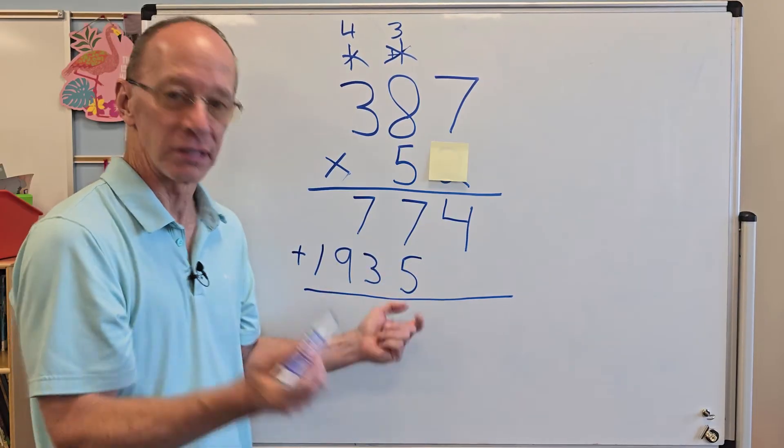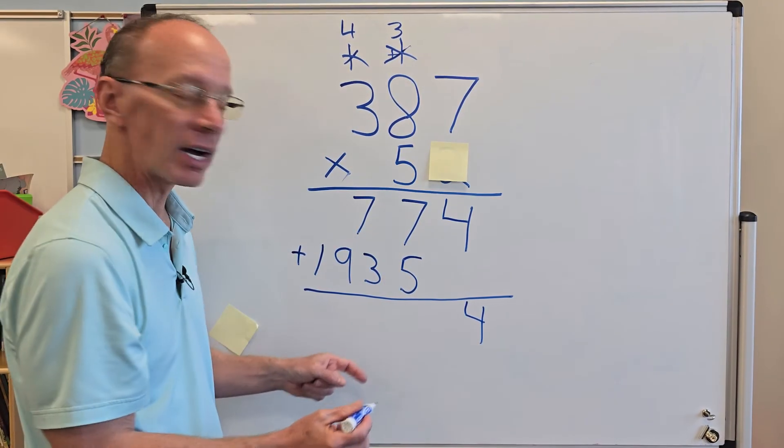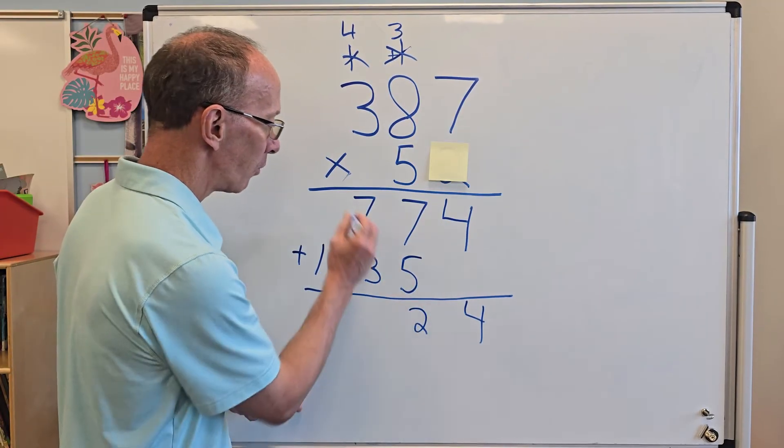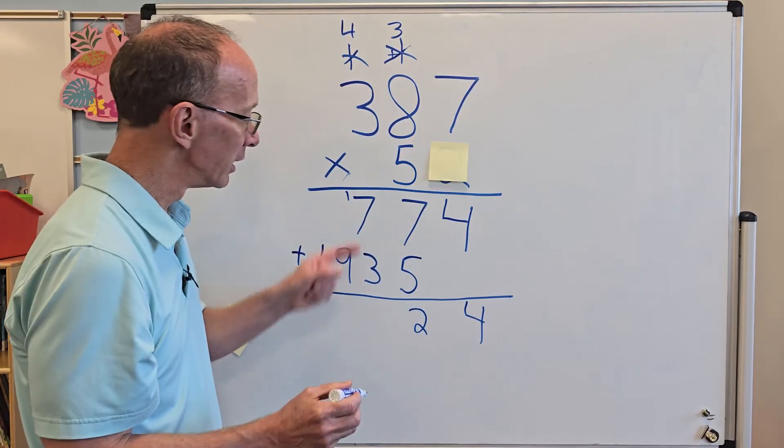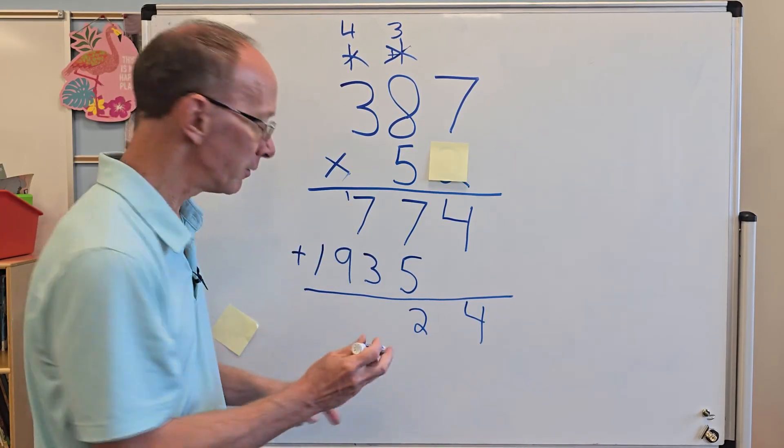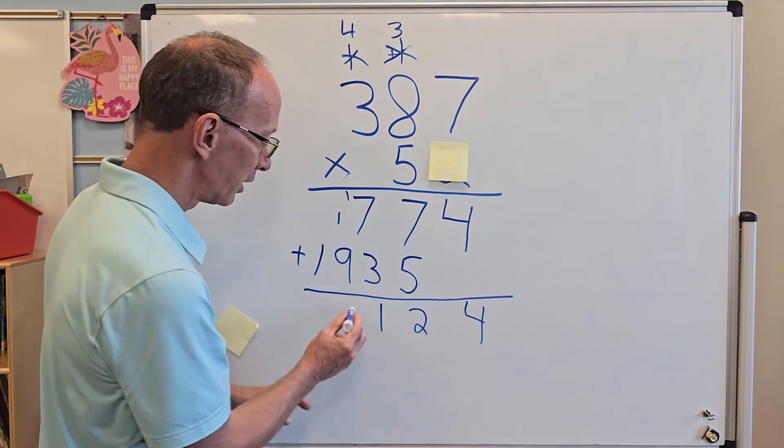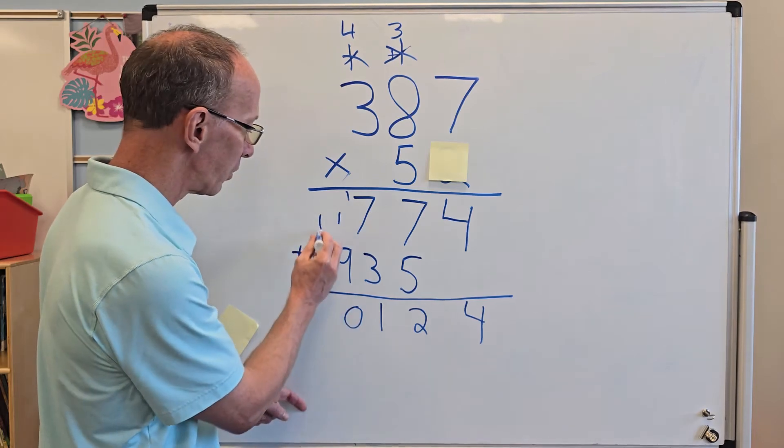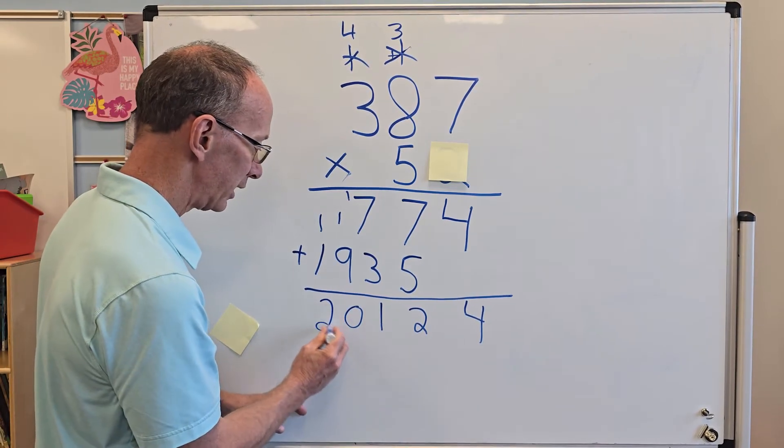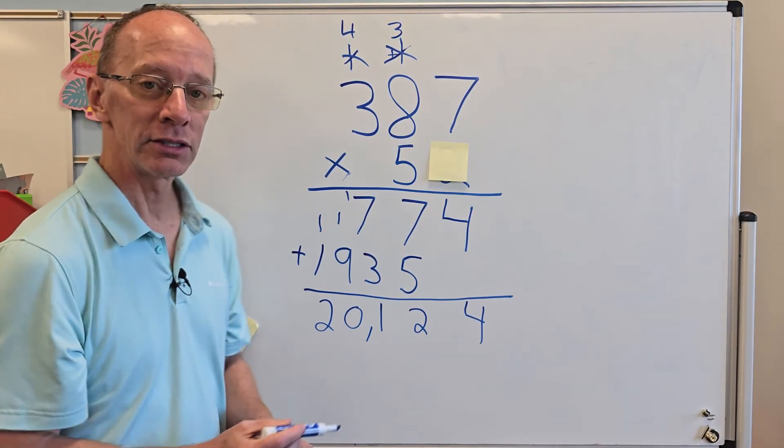All right. So four plus zero is just four. And then seven plus five is 12. And I carry that one. I put it right up there. Seven plus three is 10 plus the one, 11. Put that one up here, nine plus one, 10. Put the zero here, carry the one, one plus one, two. So here is our answer. 20,124.